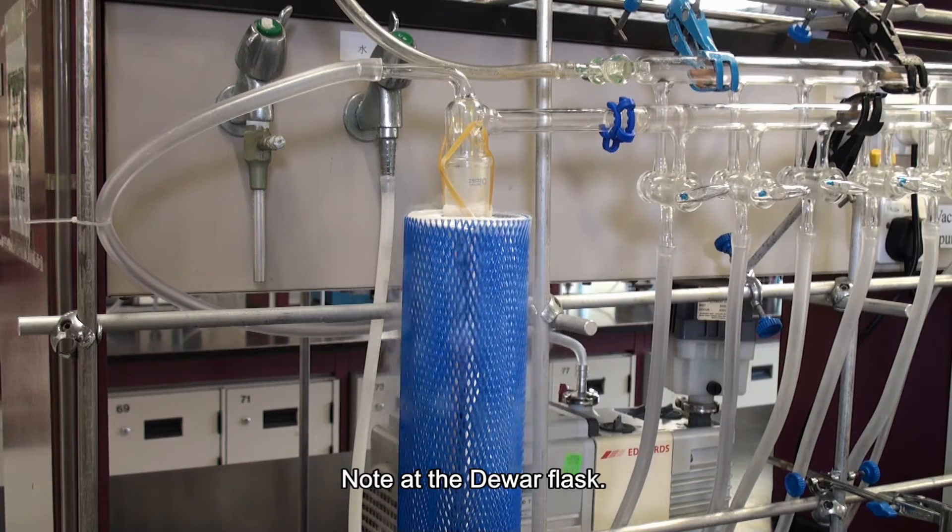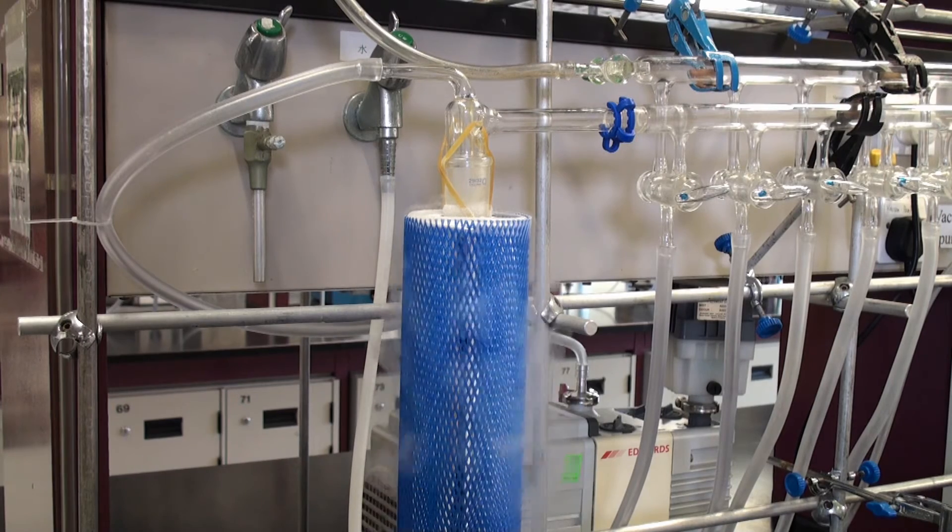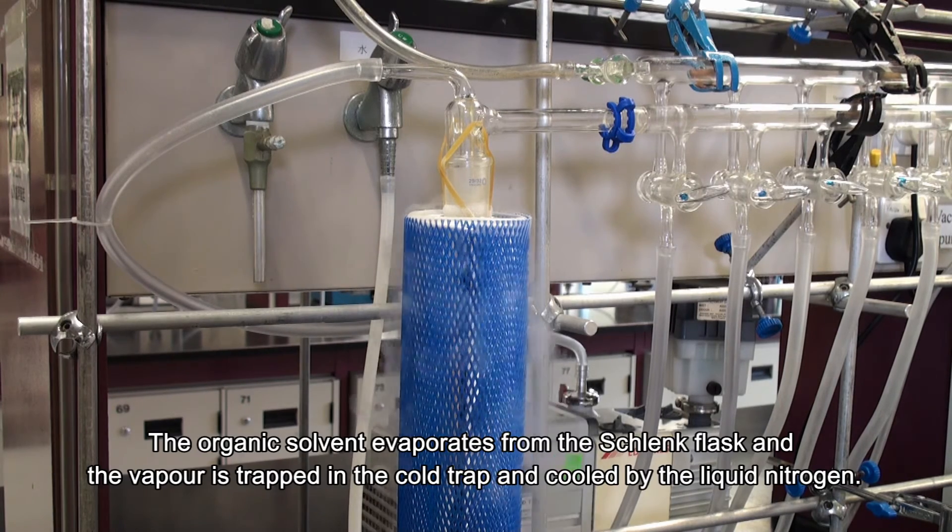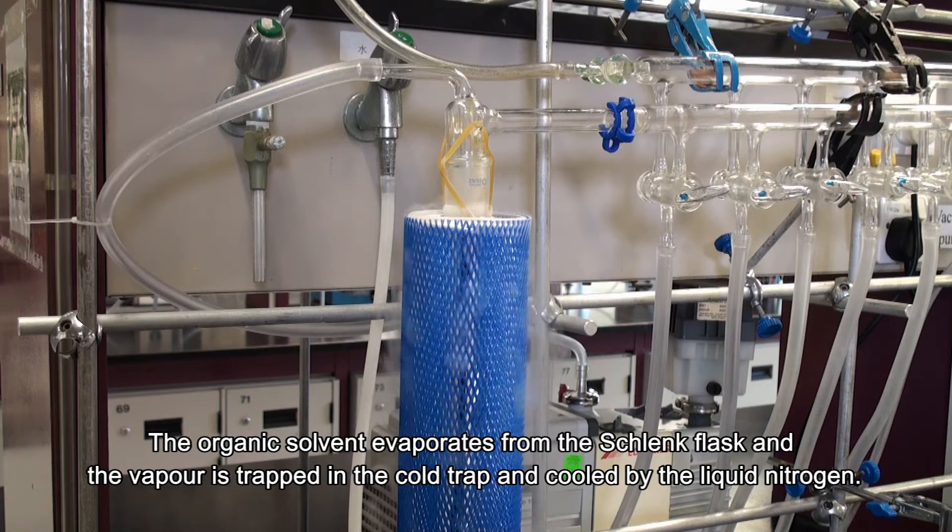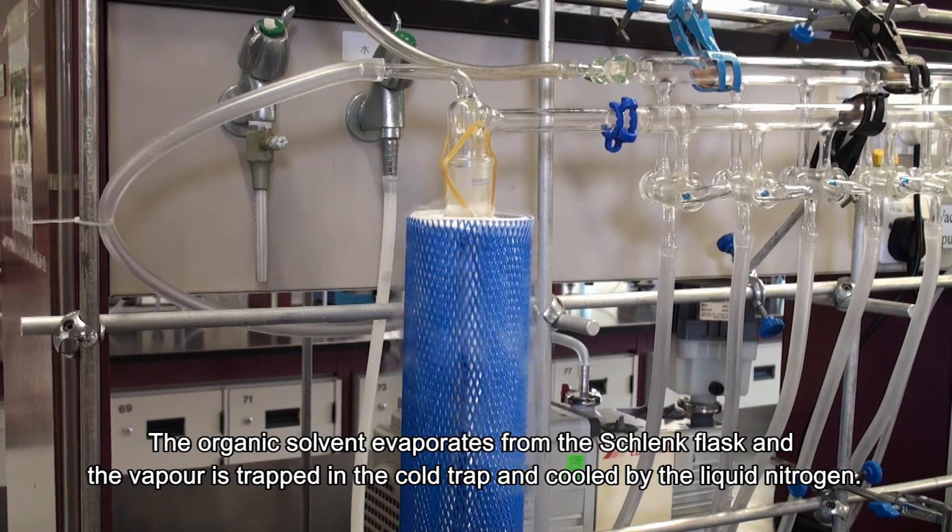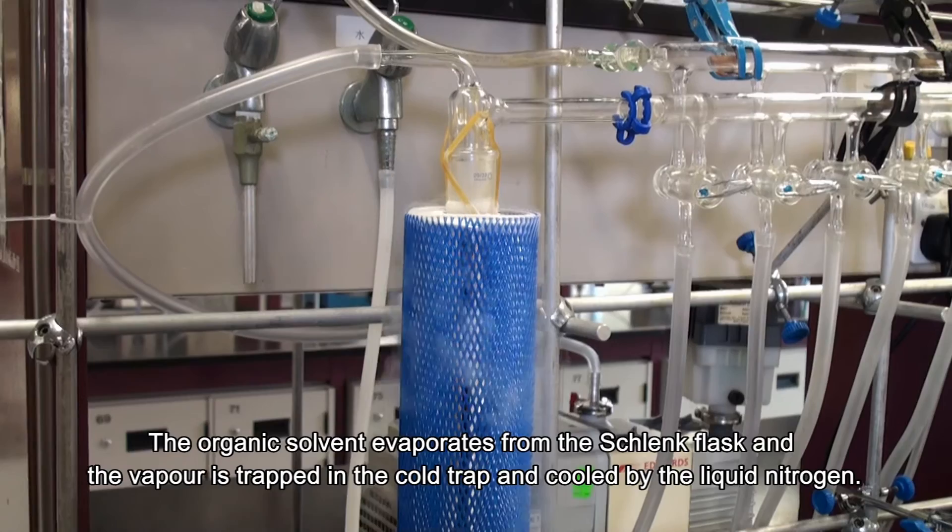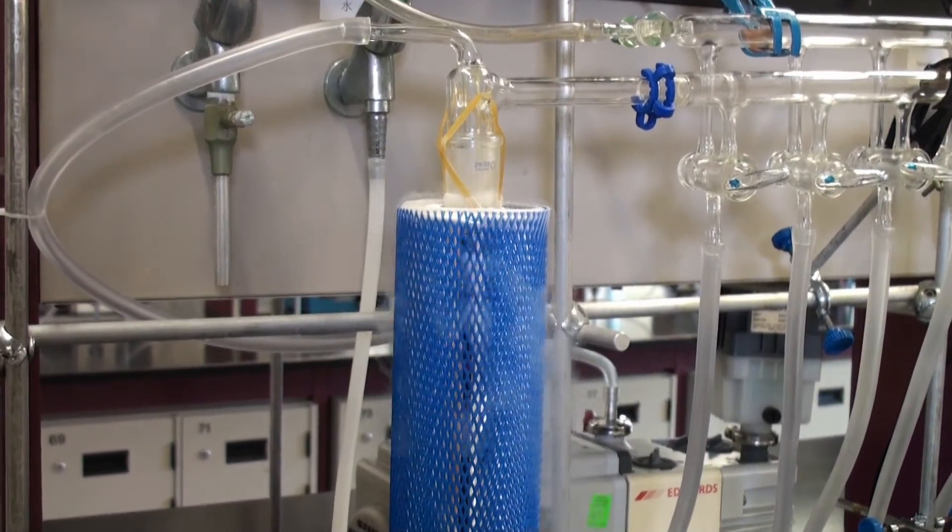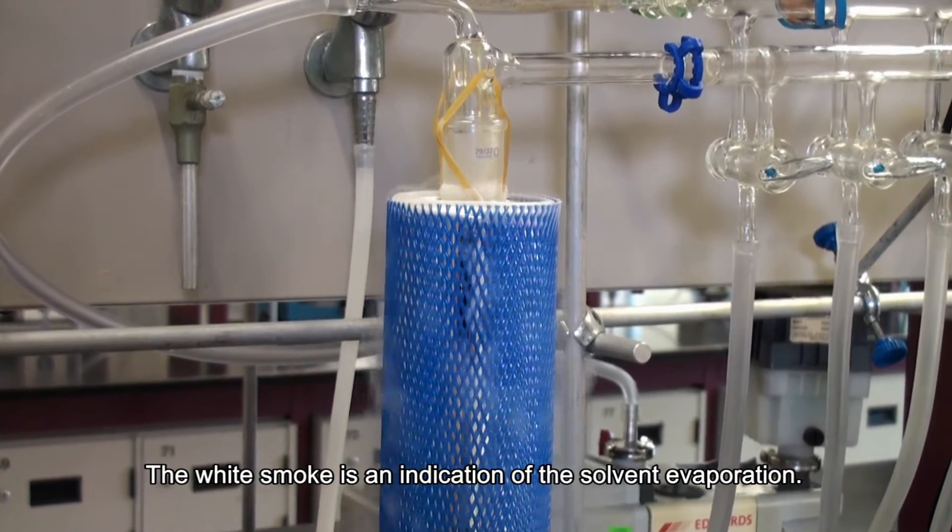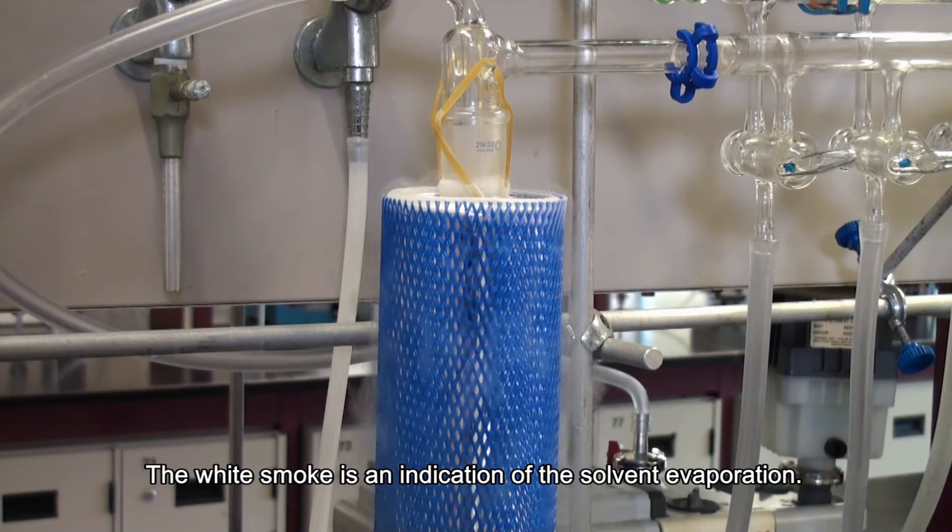Note the Dewar flask. The organic solvent evaporates from the Schlenk flask and the vapor is trapped in the cold trap and cooled by the liquid nitrogen. The white smoke is an indication of the solvent evaporation.